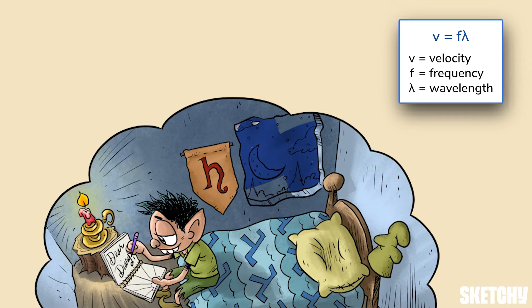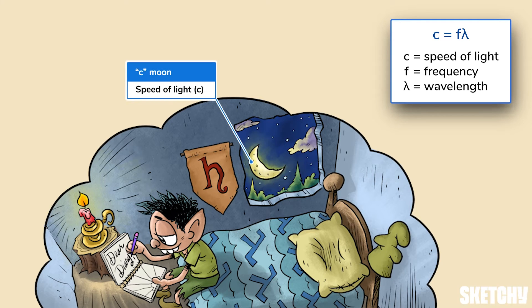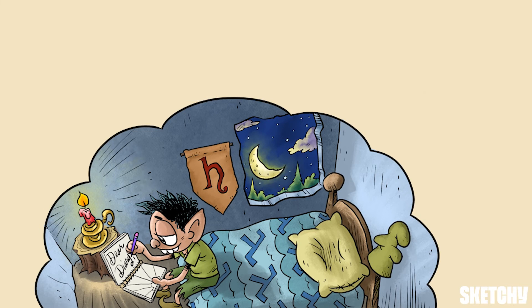Wavelength and frequency can also be multiplied to calculate the velocity of a wave. Luckily for us, when the wave in question is any type of electromagnetic radiation, it always travels at the speed of light. So we can sub in 3 times 10 to the 8th meters per second for velocity. In equations, the speed of light is denoted by a lowercase c, much like the shape of that crescent moon. With this new information, we can combine the formulas we've already seen to create a new formula for energy based only on wavelength.